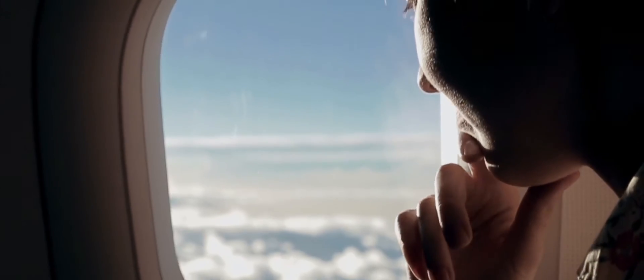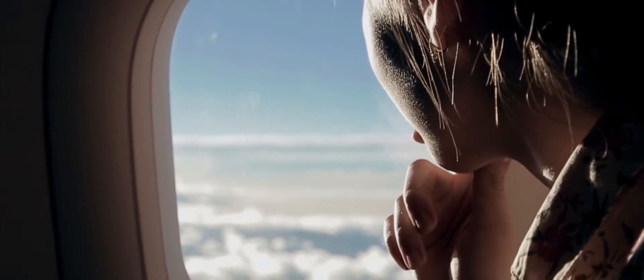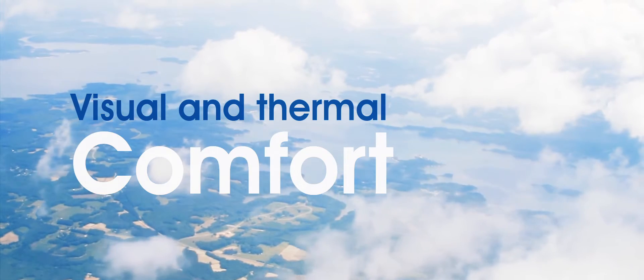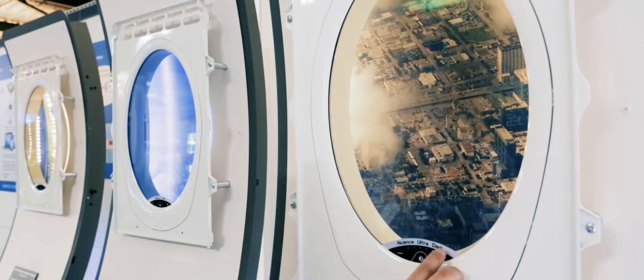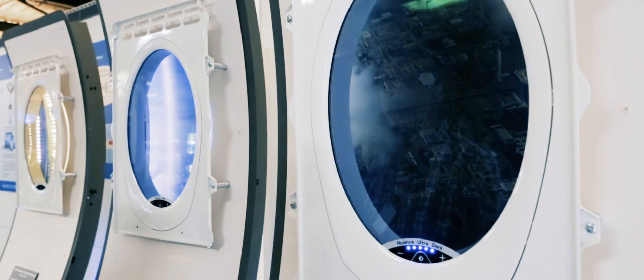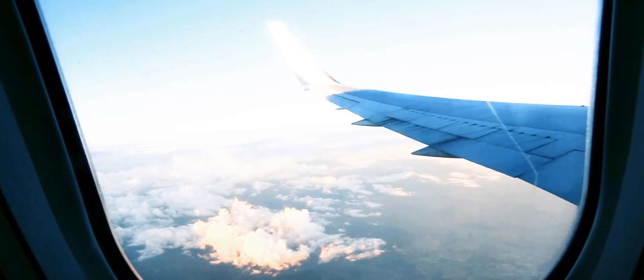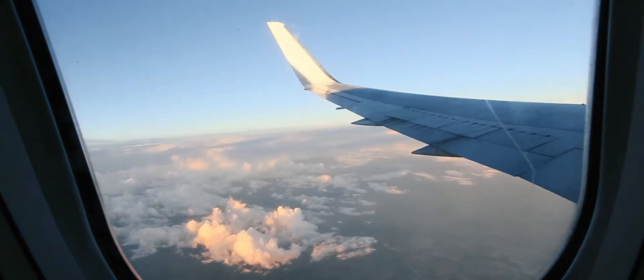Vision Systems' dimmable windows help you enhance your passenger travelling experience by improving visual and thermal comfort. The passengers can dim their window from clear to dark and any level in between to be protected from sunlight, glare and heat while enjoying the view.